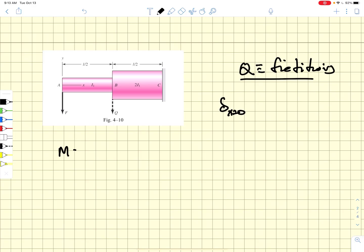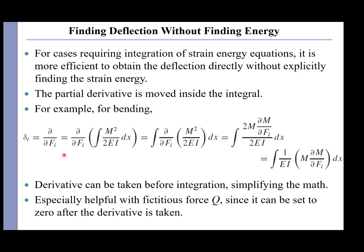Writing the moment as a function of x from the left side of the beam in the positive x direction, the moment is simply minus F times x. The partial of that moment with respect to F is minus x. Starting from the bending energy term — M squared over 2EI integrated along the length — if we take the partial derivative with respect to load Fi, we get 2M times the partial of M with respect to Fi, and the twos cancel. So in bending we always end up with 1 over EI times M times the partial of M with respect to Fi — the one-half term disappears.